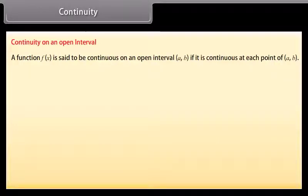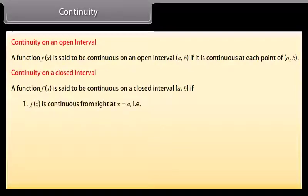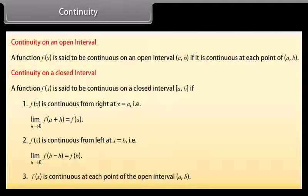Continuity on an open interval: A function f(x) is said to be continuous on an open interval (a, b) if it is continuous at each point of (a, b). Continuity on a closed interval: A function f(x) is said to be continuous on a closed interval [a, b] if: 1. f(x) is continuous from the right at x = a, i.e., limit h→0 of f(a + h) = f(a); 2. f(x) is continuous from the left at x = b, i.e., limit h→0 of f(b − h) = f(b); 3. f(x) is continuous at each point of the open interval (a, b).